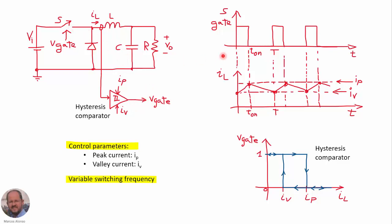Here on the right we have the waveforms. This is the current through the inductor. Once the switch is on, the current through the inductor is increasing. Once the current reaches the maximum value, the peak value, then the switch is turned off by the hysteresis comparator. So the current is going to decrease linearly. And when the current reaches the minimum value, IV, then the comparator is going to activate the switch again, and we continue in this way.